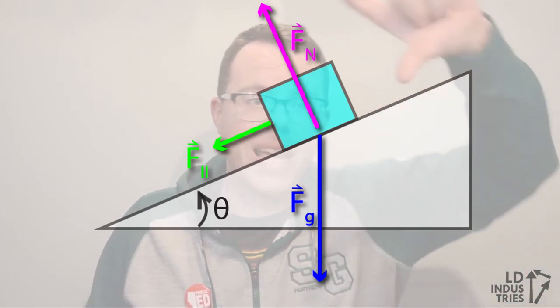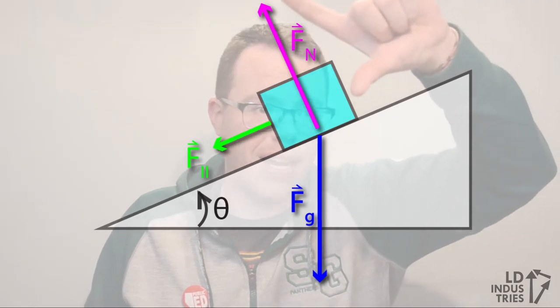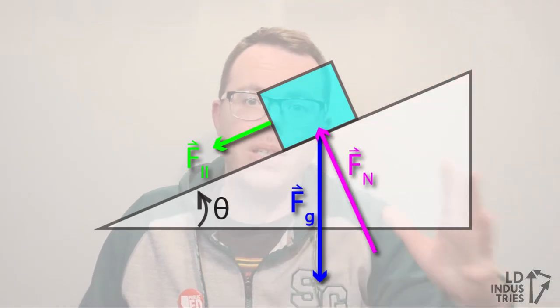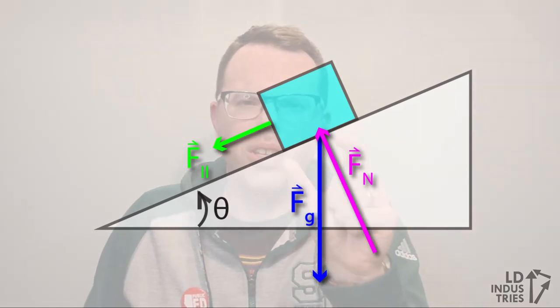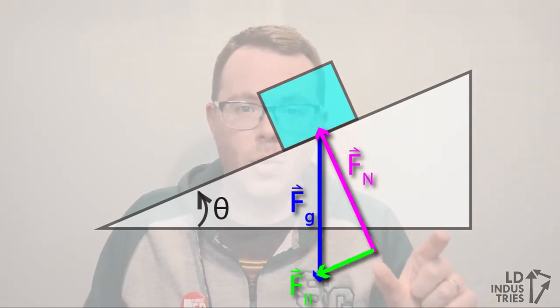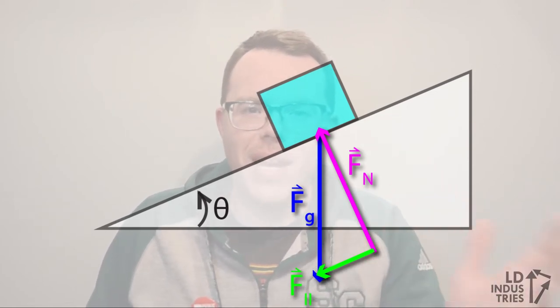Well I can actually take that normal force vector and I can slide it down a little bit so that it's next to the force of gravity. You can also take that weird other little force vector and put it down there as well. And when I do that, what I end up with is a triangle, a right angle triangle.